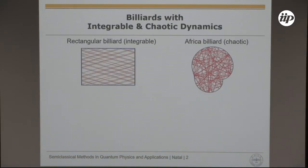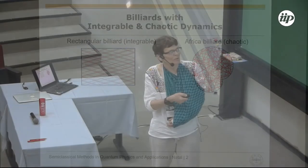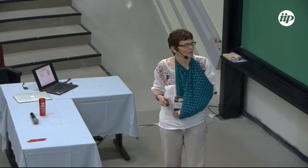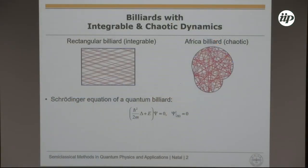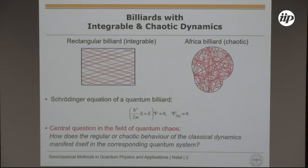Here I show two examples of billiards. One is an integrable rectangular billiard. The Africa billiard is a chaotic one — due to exponential instability of the dynamics, after some time the motion becomes unpredictable. The eigenvalues and eigenfunctions of the corresponding quantum systems are obtained by solving the free-space Schrödinger equation with Dirichlet boundary conditions. We are interested in quantum chaos, and one central question is how the properties of regular or chaotic dynamics become visible in the corresponding quantum system.